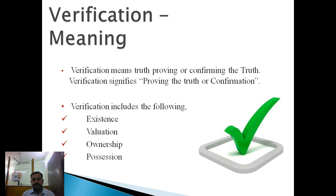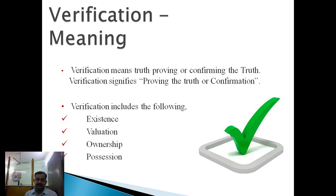The next element is ownership, meaning the organization should be the true owner of the assets. The next element is possession, which means custody — the assets shown in the accounts must indicate who actually possesses that particular asset.